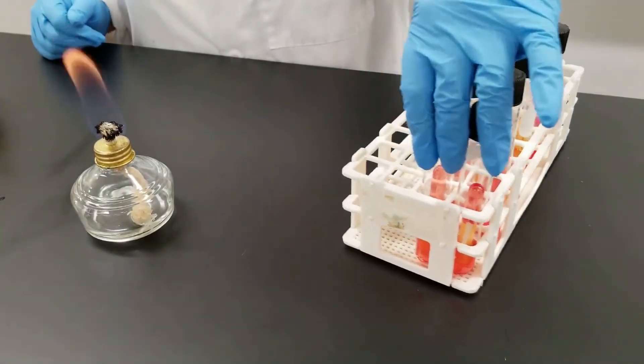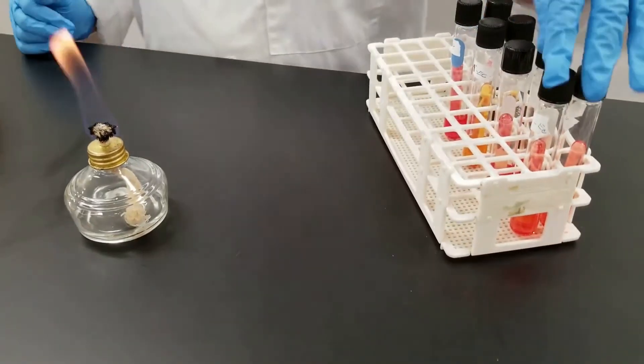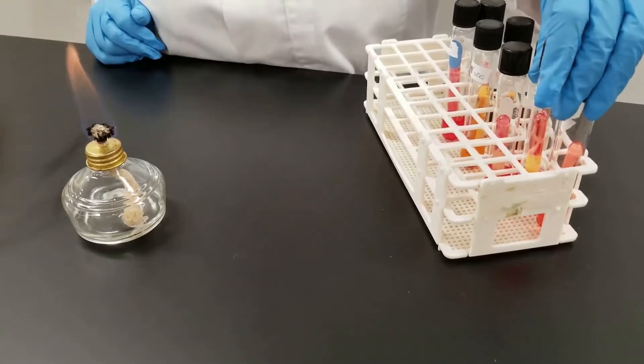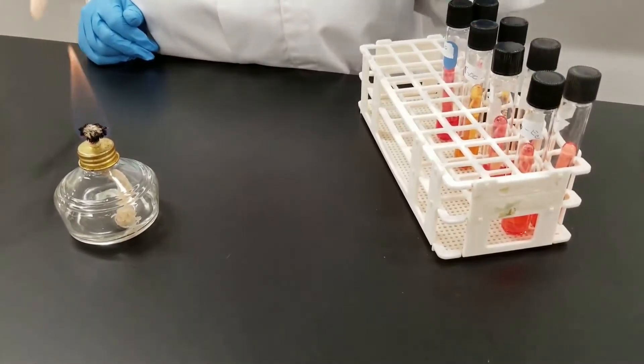So we have four different sugars. They look the same pretty much in the tube, so you can't just go by looking. You need to watch your labels. We have glucose, we have lactose, maltose, and sucrose.